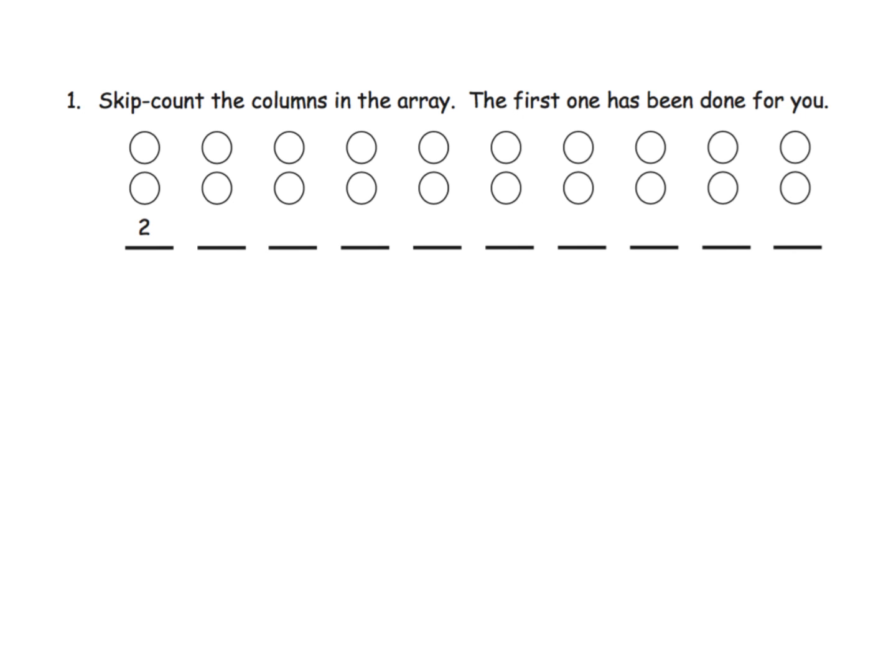Here we're just going to be skip counting the columns in the array. You got, here's two, here's another two, but we're not going to write two, we're going to call that four. And then six, and then eight, and then that was a silly way to write ten. Let's erase that and let's make that ten.